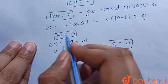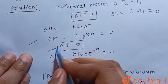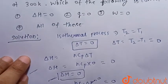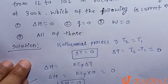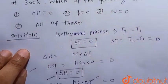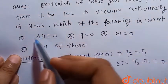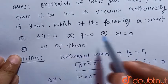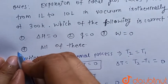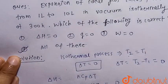So we get that Q = 0, W = 0, and delta H = 0 for the expansion of an ideal gas in vacuum isothermally. Considering the given options: delta H = 0 is correct, Q = 0 is correct, and W = 0 is correct. Hence option 4, that is all of these, is the correct choice. Thank you.